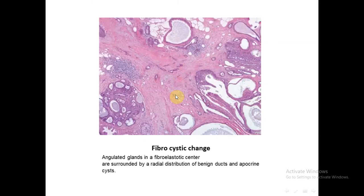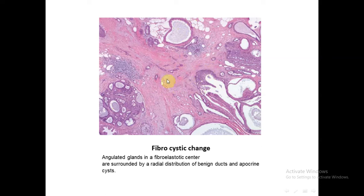Microscopically, fibrocystic change can be of a non-proliferative type or proliferative type. Here we have a proliferative fibrocystic change with multiple dilated cystic structures lined by epithelial cells which show proliferation and presence of myoepithelial cells. Here we have the stromal fibrosis. This is proliferative type fibrocystic change.